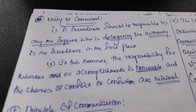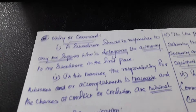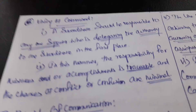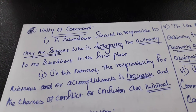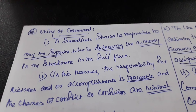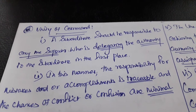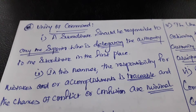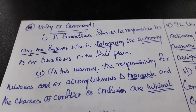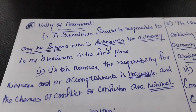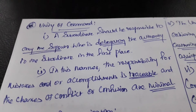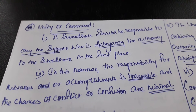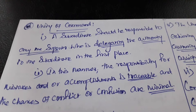The next principle is unity of command. Unity of command means subordinates get commands from one superior. A subordinate should be responsible to only one superior who is delegating the authority to the subordinate in the first place. Subordinates should receive commands from only one superior.